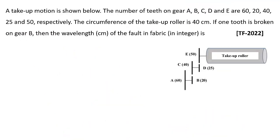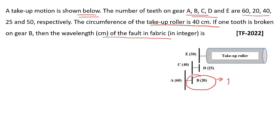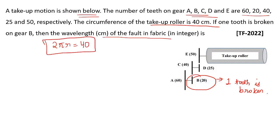Next question: in a take-up motion, the number of teeth on gears A, B, C, D, and E are 60, 20, 40, 25, and 50 respectively. The circumference of the take-up roller is 40 centimeters. If one tooth is broken on gear B, find the wavelength of the fault in the fabric (in integers). One tooth is broken on gear B, and the circumference 2πr = 40 cm. Since B takes four rounds, C takes two rounds.